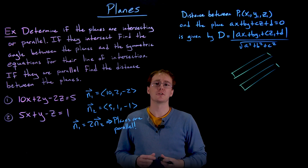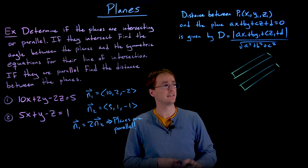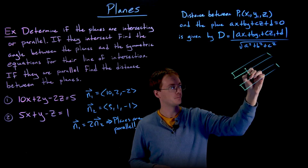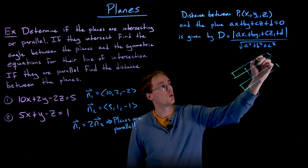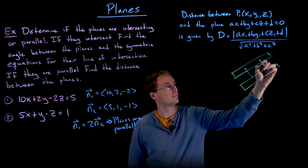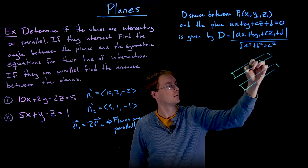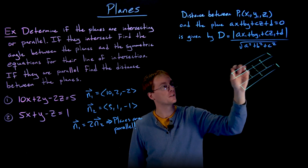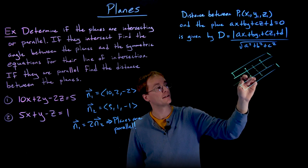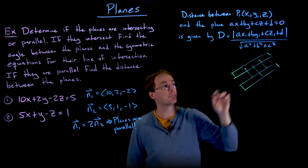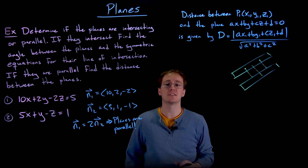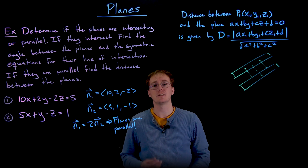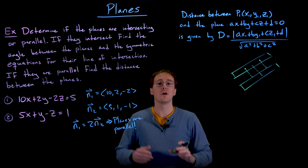Finding the distance between our two planes really is the same as finding the distance from a point on one plane to the other plane. It doesn't matter which point we work with in a plane — if we try to find the distance from any point on one plane to the other plane, those distances are going to be the same no matter what. So the next step is finding a point that is on one of our planes.